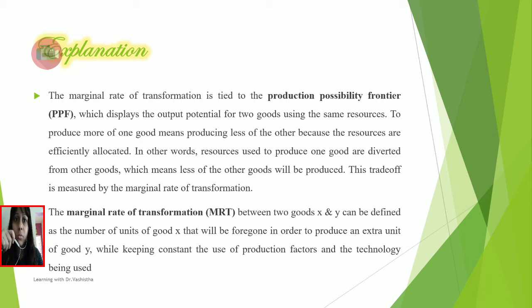Now the explanation part. The marginal rate of transformation is tied to the production possibility frontier, known as PPF, and this PPF displays the output potential for two goods using the same resources. To produce more of one good means producing less of another because the resources are efficiently allocated and there is scarce supply. In other words, resources used to produce one good are diverted from the other good, which means less of the other good will be produced. This trade-off is measured by the marginal rate of transformation.